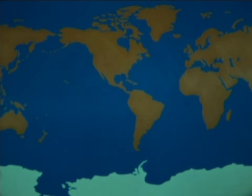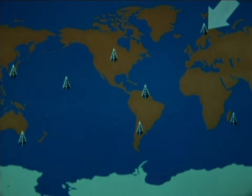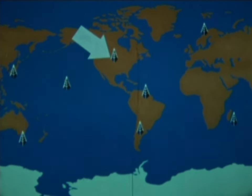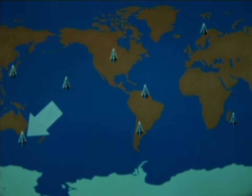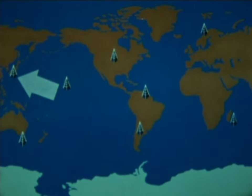To provide worldwide coverage, the Omega System will use eight VLF transmitting stations: one in Norway, another in Trinidad, one in Hawaii, and another in north-central United States. Of the remaining, one is in the Indian Ocean, another in the southern part of South America, one in the Tasman Sea area, and finally, one in the western Pacific.